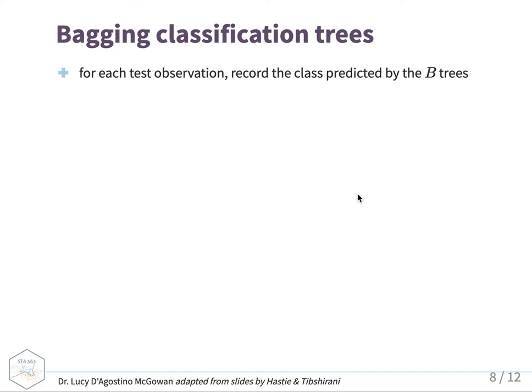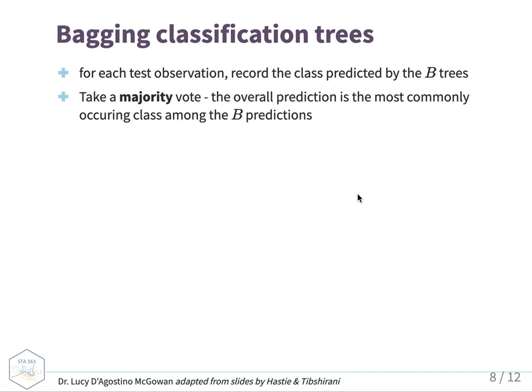For classification trees, it's a little bit different. For each test observation, you record the class predicted by each of the B trees, and then you take the majority vote. The overall prediction is the most commonly occurring class among the B predictions. So instead of taking the average, you take the majority vote to figure out which class was most likely across all the predictions you estimated.